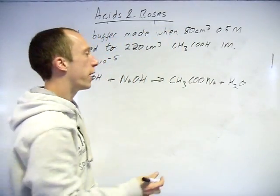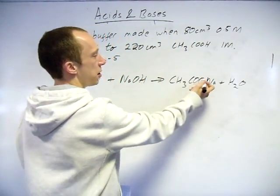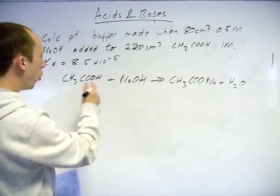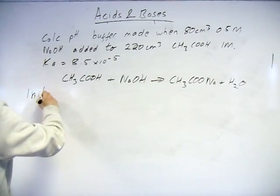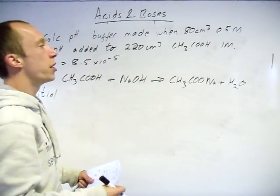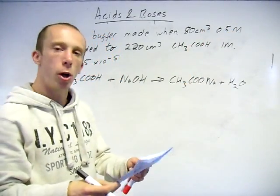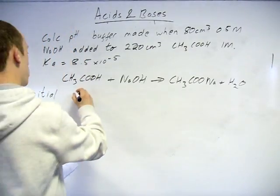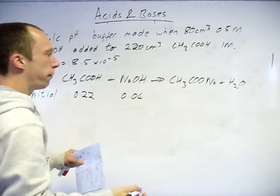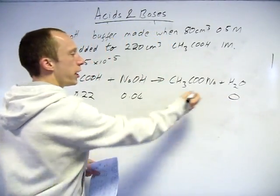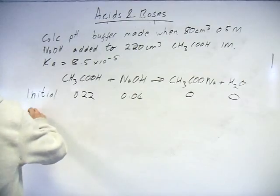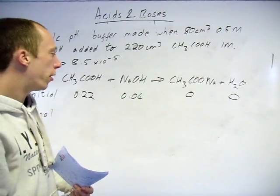The sodium methanoate there - that's going to split up into the solution. That will be the COO minus, which you've seen previously. Work out the amount of moles of these you had initially. In terms of moles, we know the concentration, we know the volume. It's 0.22 for this, 0.04 for the sodium hydroxide. Obviously 0 here - we haven't added them yet, they haven't reacted.